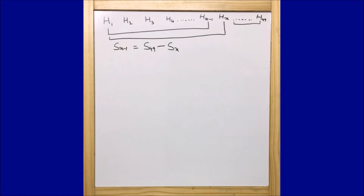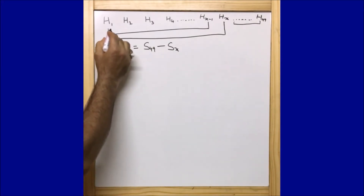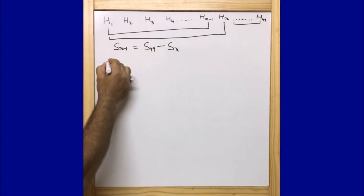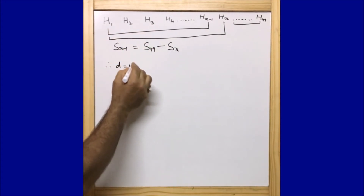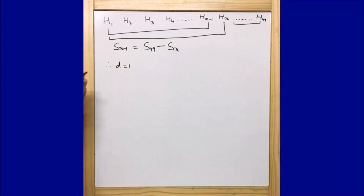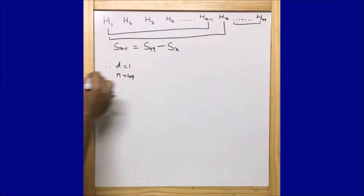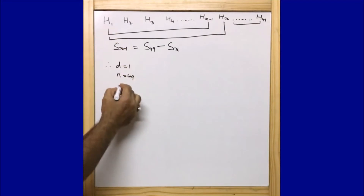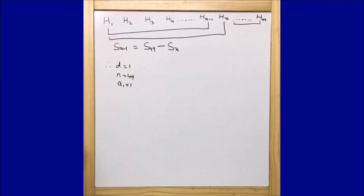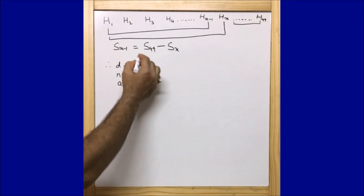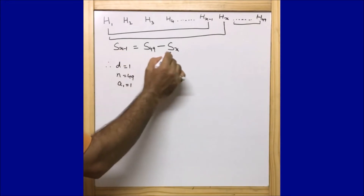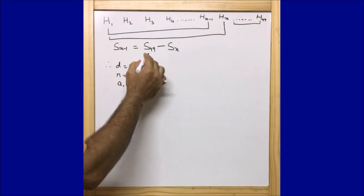Now, since the houses are numbered consecutively 1, 2, 3, 4, the common difference d equals 1. The last house n equals 49, and the first term a1 equals 1. Let us now find the value of S49 using these values.